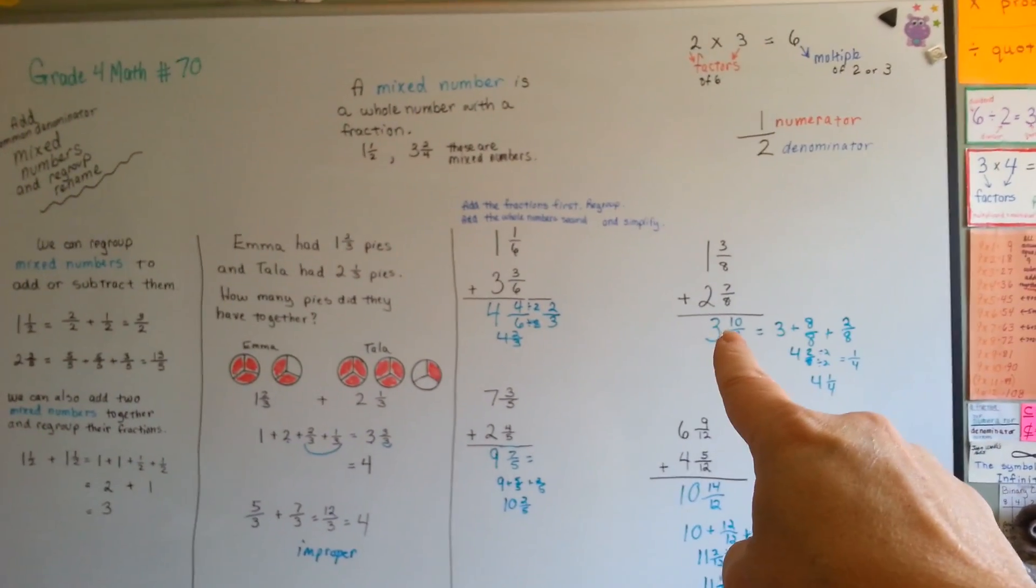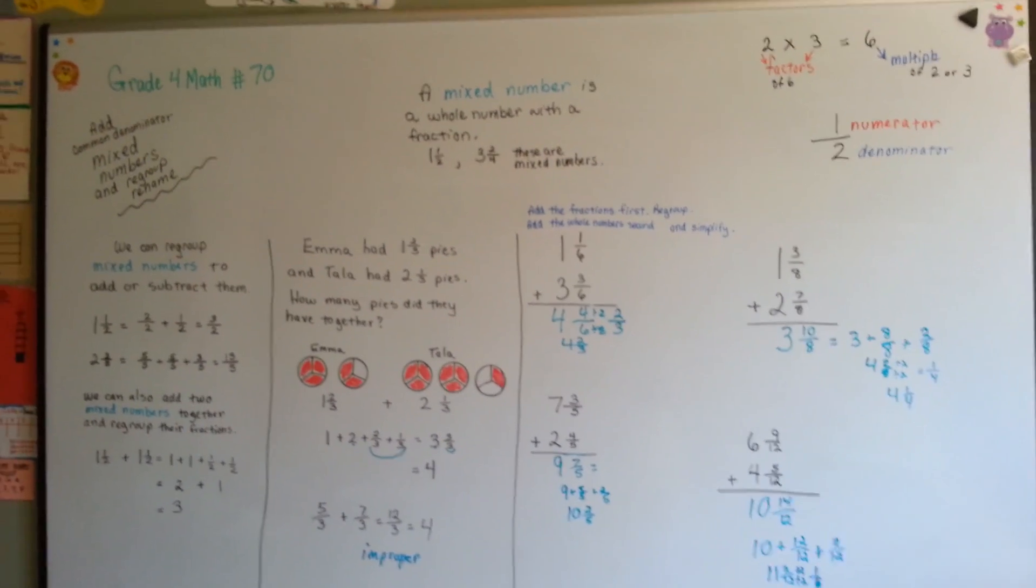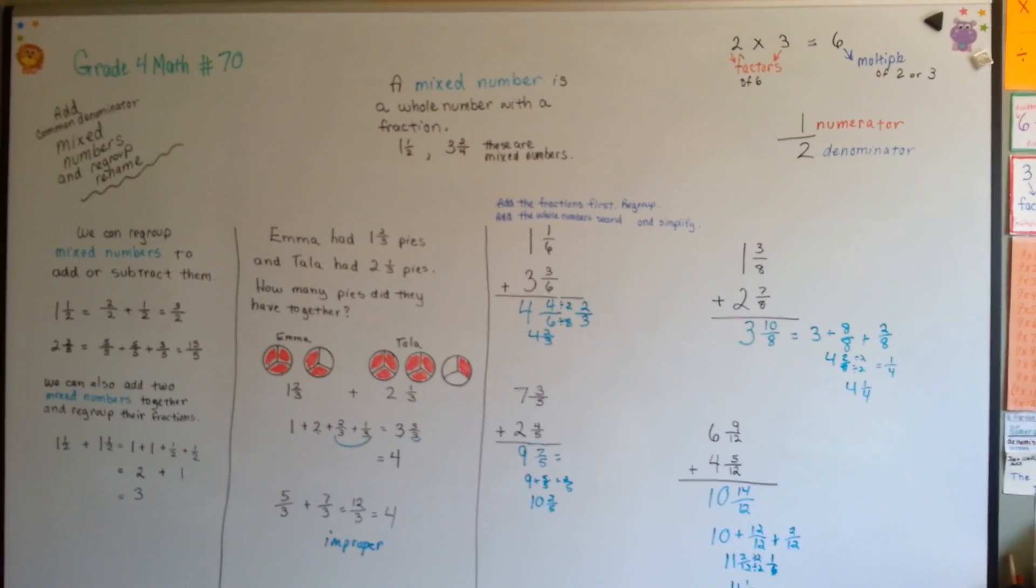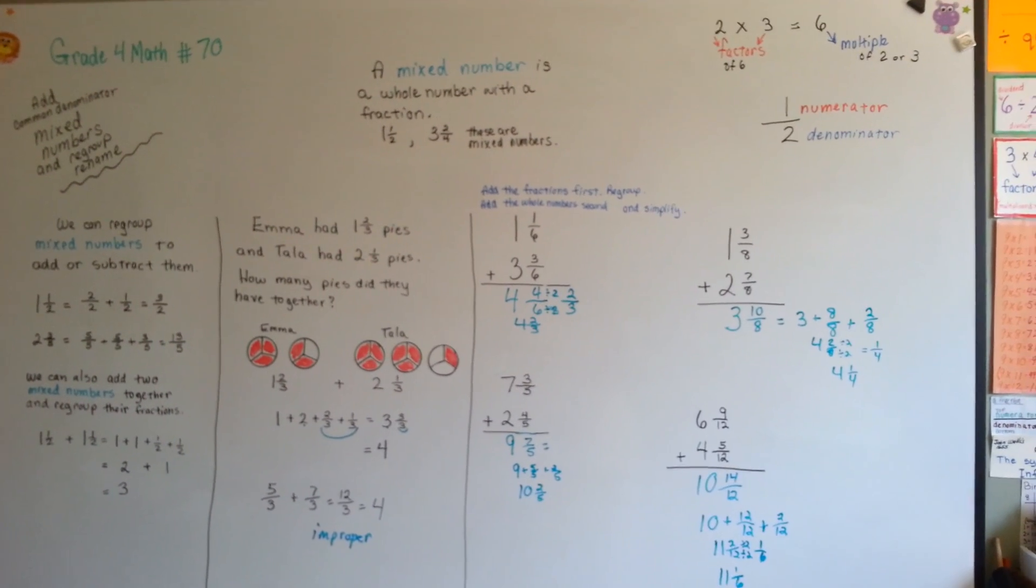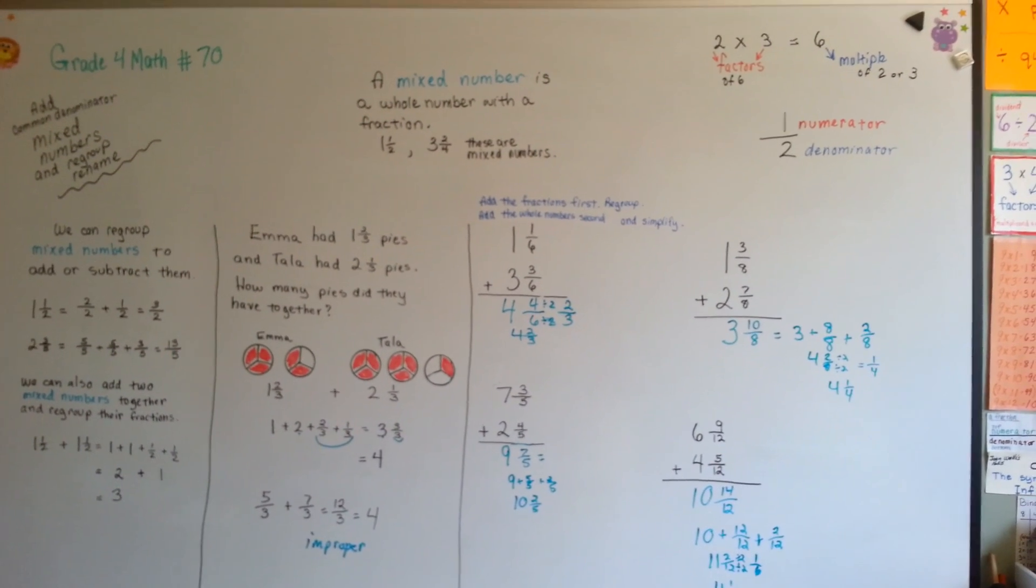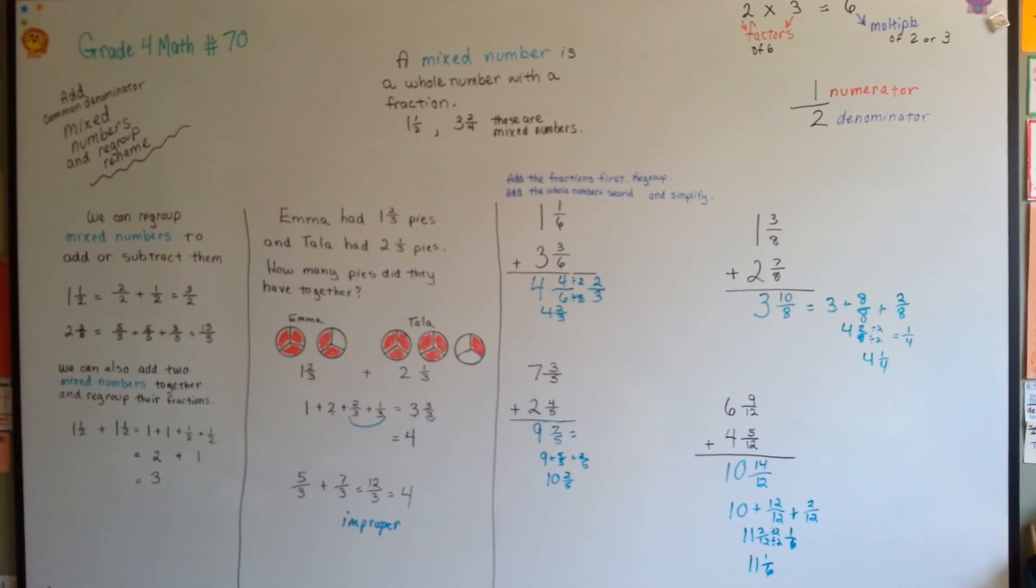And you'll be able to just look at a number like this and flip it right away into the 4 and 1/4. Practice. Perfect practice makes perfect. I'll see you next video. We're going to talk about subtracting common denominator mixed numbers and regrouping or renaming them. I hope I see you there. Bye bye.